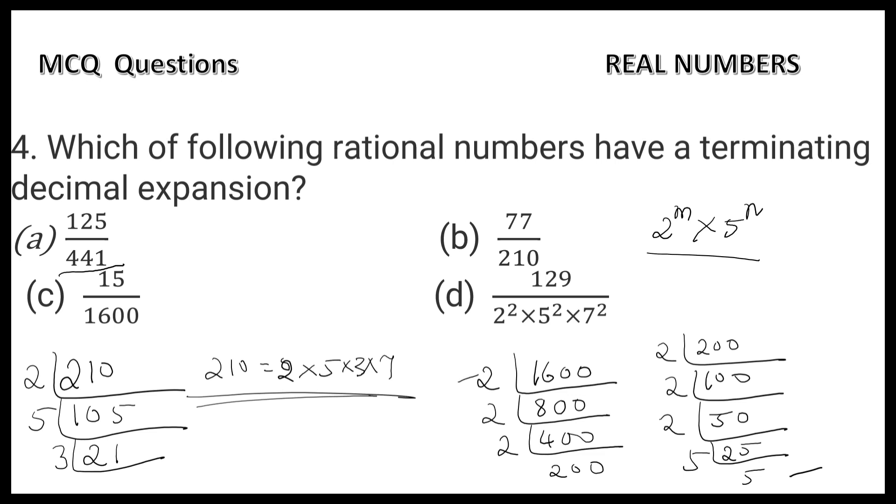So it is in the form 2^6 × 5^2. This is in the form 2^m × 5^n. Therefore, this is a terminating decimal expansion. Option C is correct. Definitely option D is wrong.